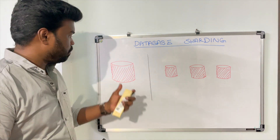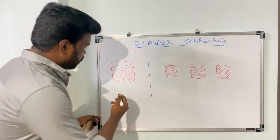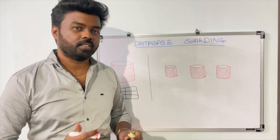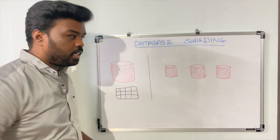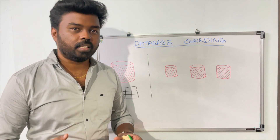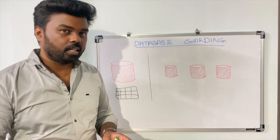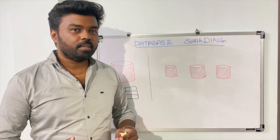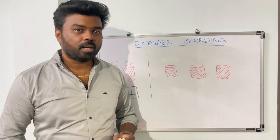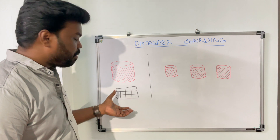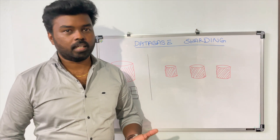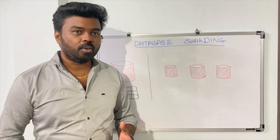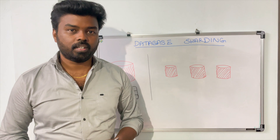Imagine you have a database table to store all your user data — username, user page, address, and all other details associated with the user. When you start building your application, the number of records in the user table might be less, like a few thousand or 10,000 records, and searching for a particular record must be fast with very good query performance. But when the data increases as your application becomes more popular, the table might grow to hold millions or even billions of records, impacting query performance and storage capacity. That's where we need to think about how to design the database so large amounts of data won't affect application performance.